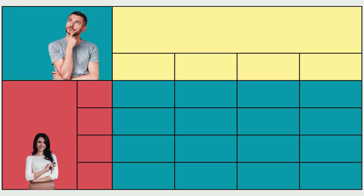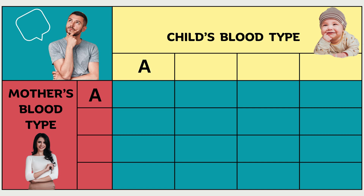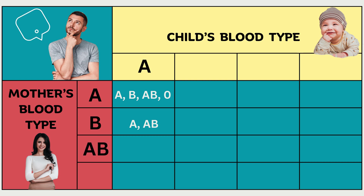Now let's examine the same table, but with the assumption that we know the child's blood type and the mother's blood type while remaining uncertain about the father's. If both the mother and the child are blood type A, the biological father could have any of the four blood types: A, B, AB, or O. If the child has blood type A and the mother has blood type B, the possible blood type of the father is A or AB. For a child with blood type A and a mother with blood type AB, the father could have any of the four blood types. If the mother is blood type O and the child is blood type A, the potential father could only be A or AB blood type.